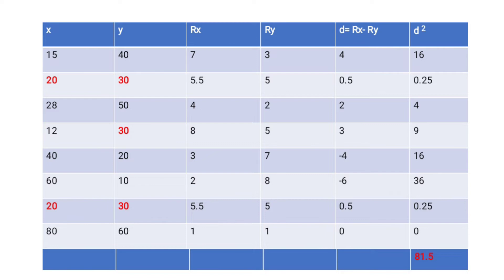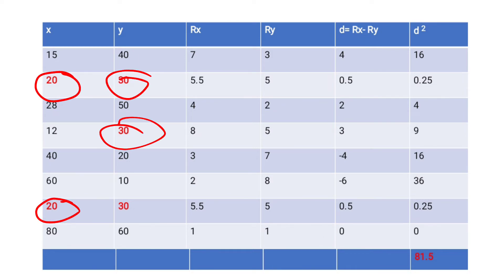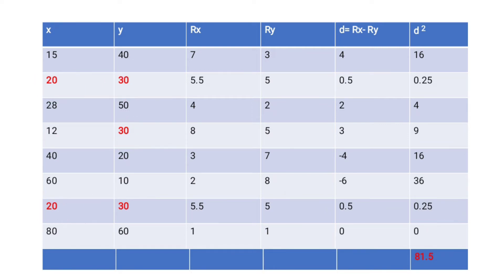So X column: 15, 20, 28, 12, 40, 60, 20, 80 and Y column: 40, 30, 50, 30, 20, 10, 30, 60 as given in the question. I have marked some things in red — don't get confused: 20 is repeated 2 times in X, and 30 is repeated 3 times in Y. I have given red color for those things. So first we will rank X.